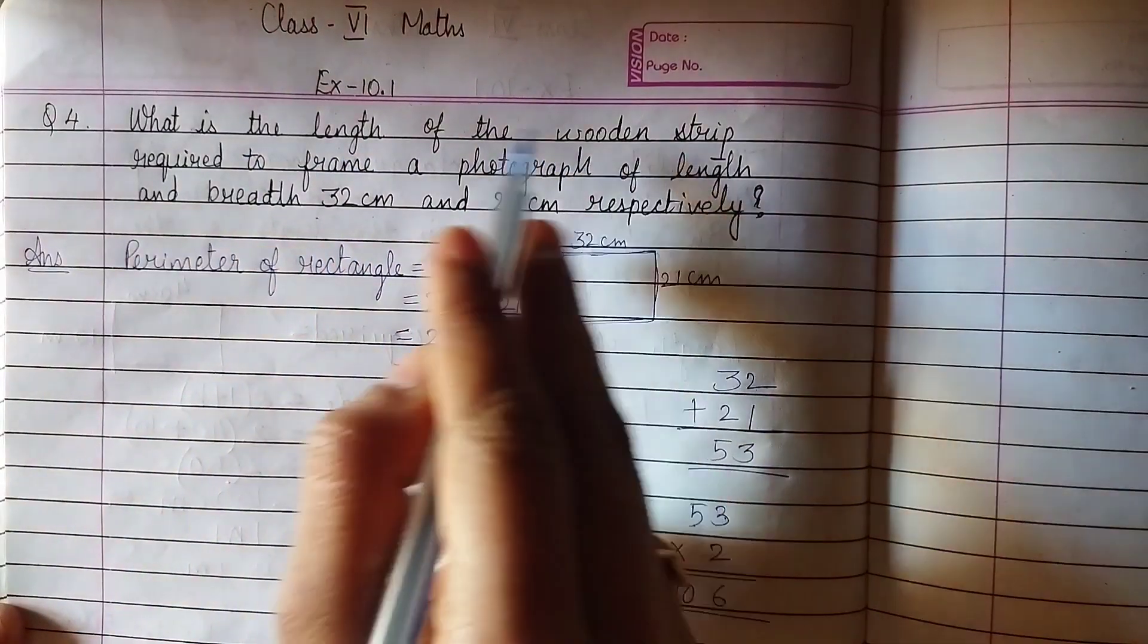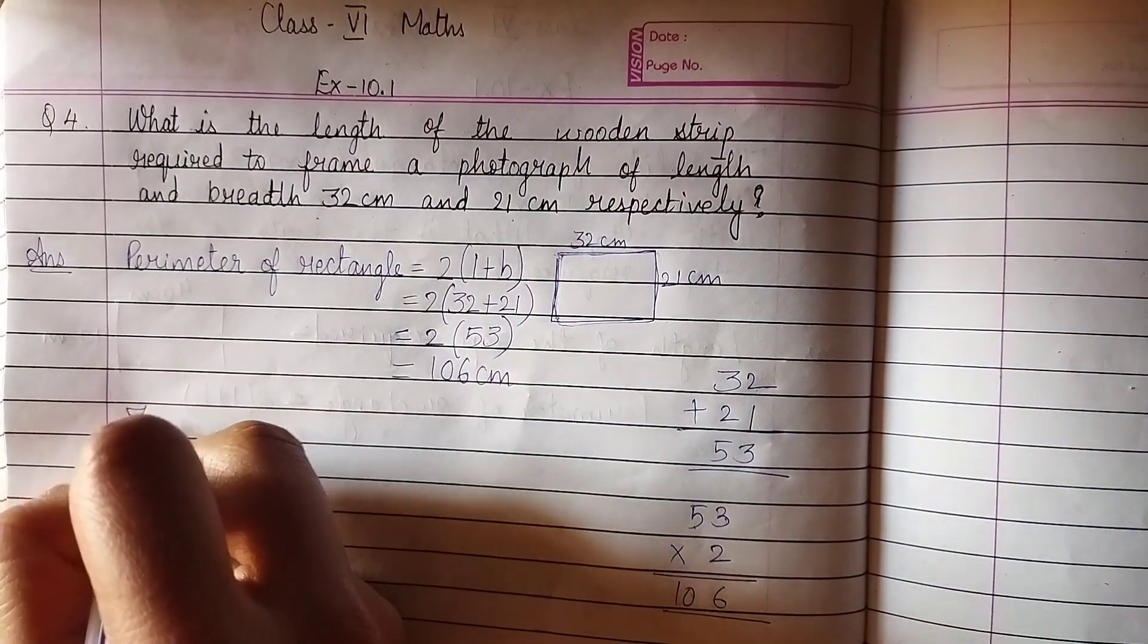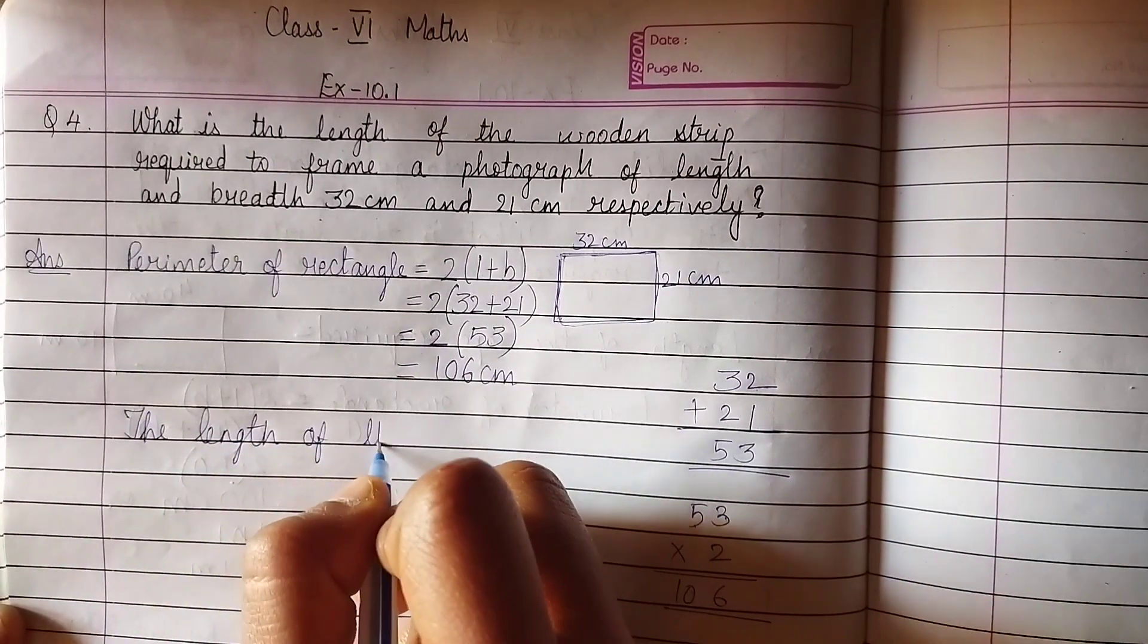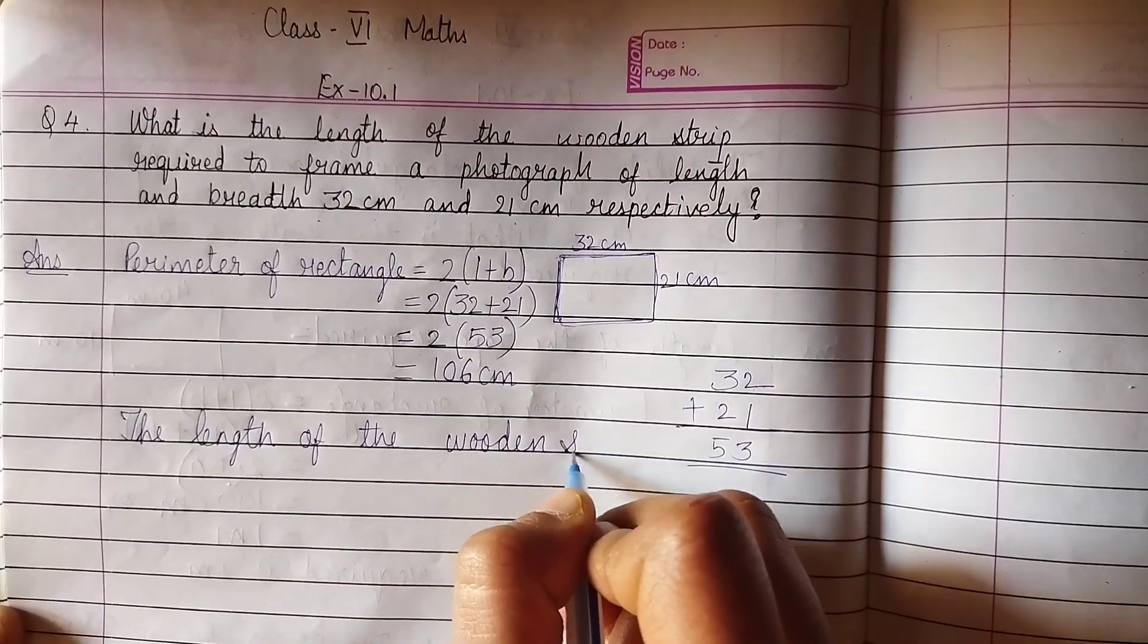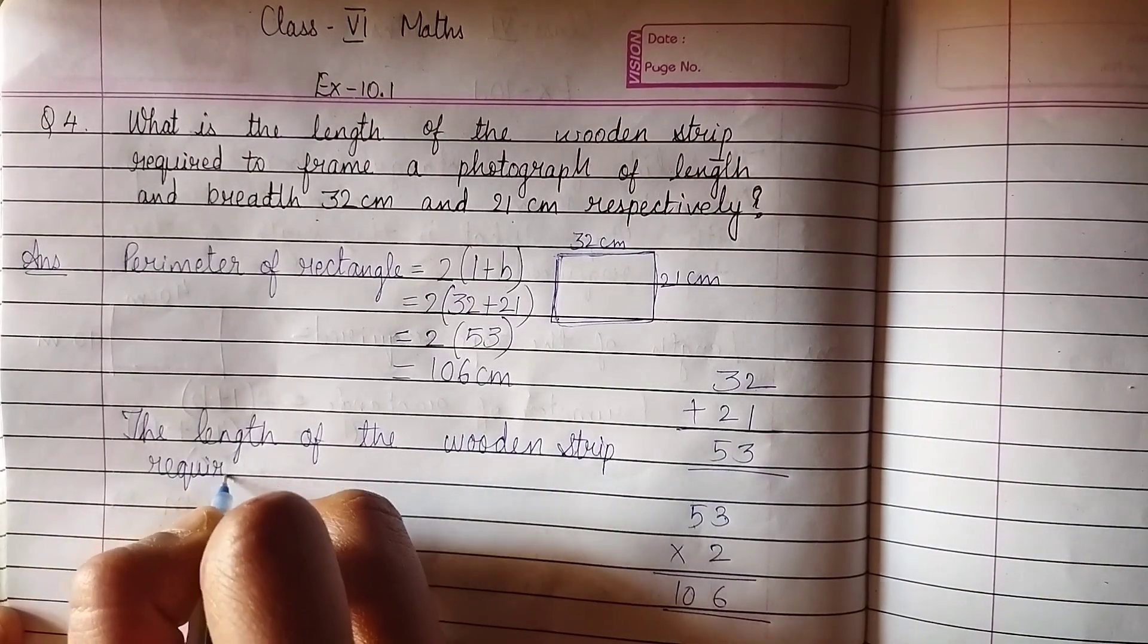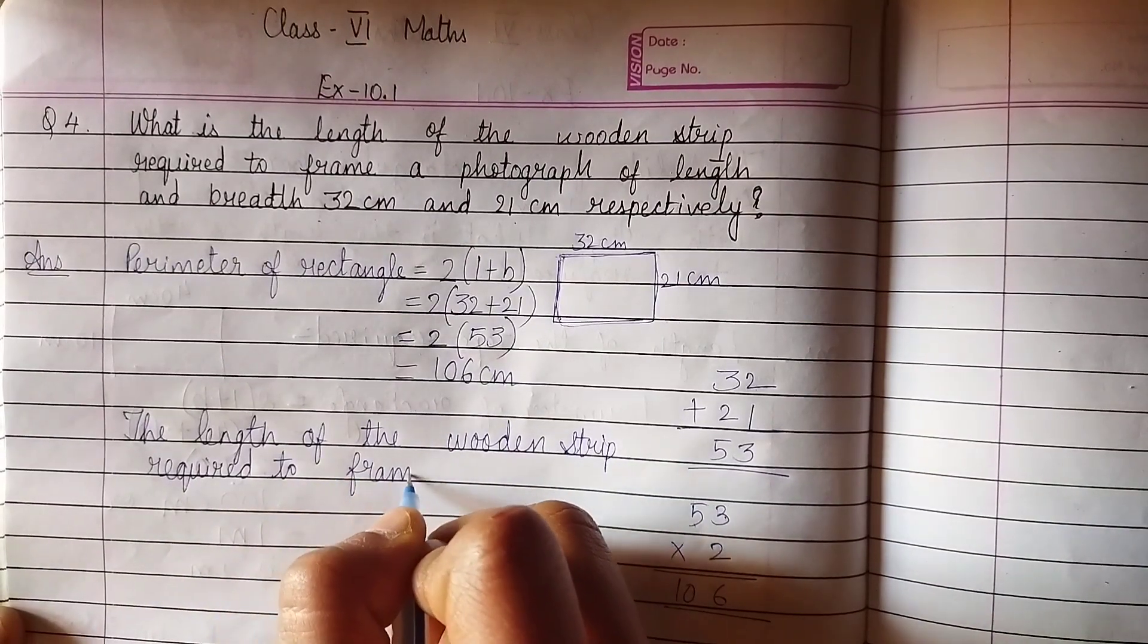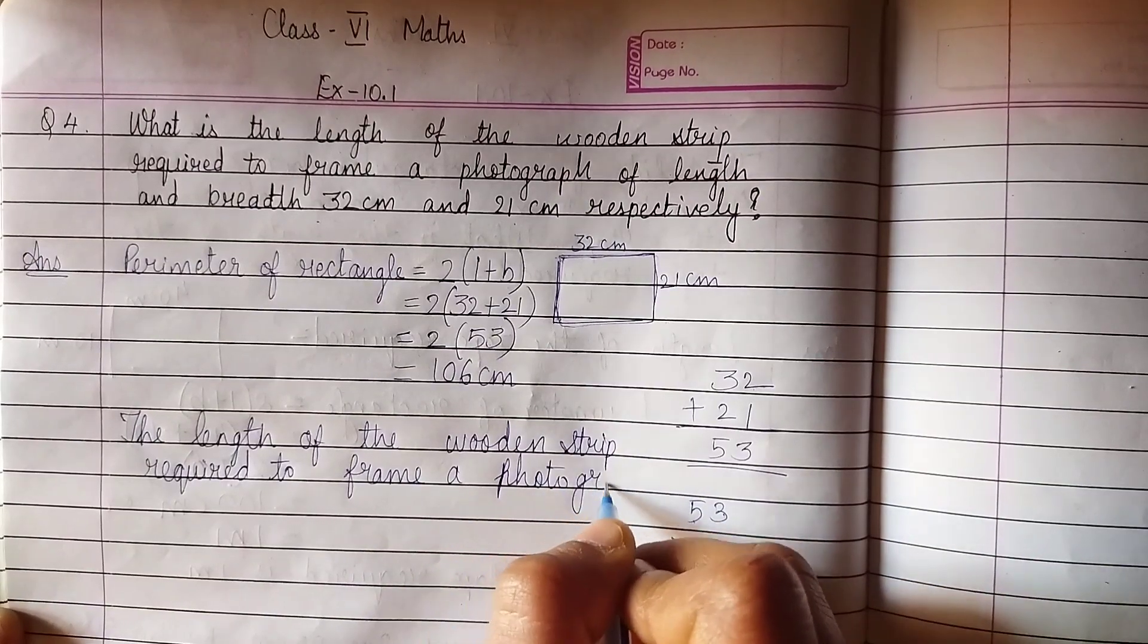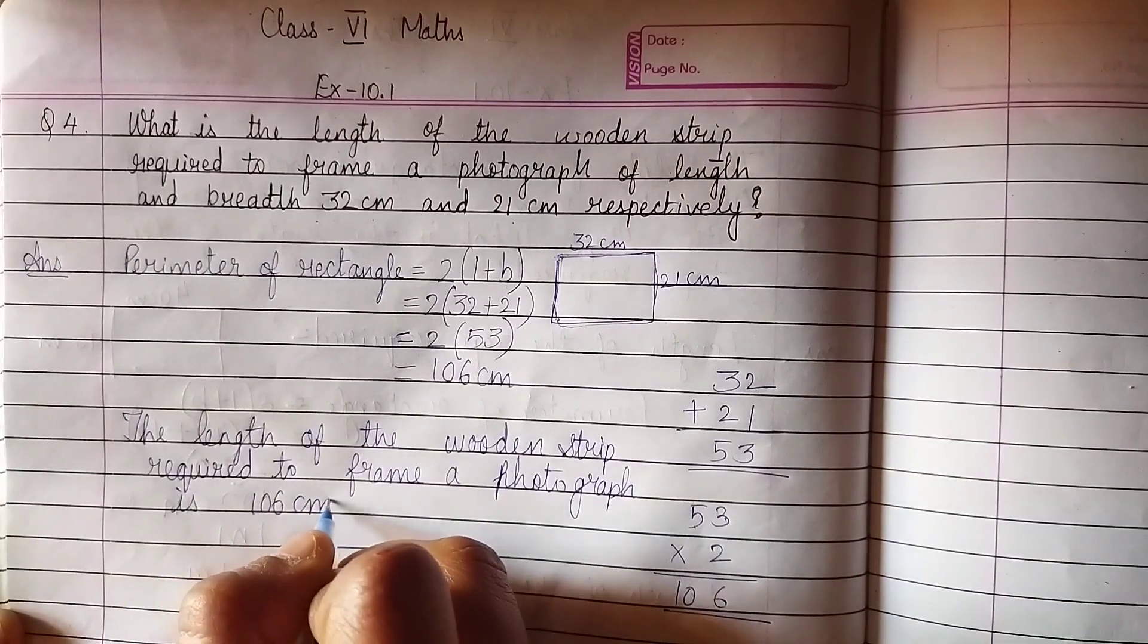So, what is the length of the wooden strip required? The length of the wooden strip required to frame a photograph is 106 cm.